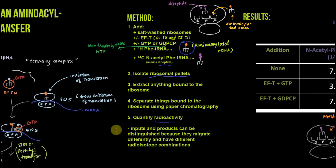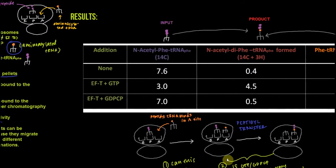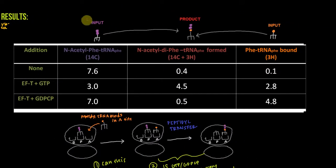The inputs and products can be distinguished because they migrate differently (they're different sizes) and have different radioisotope combinations. Here I've redrawn this as a table. We've got two inputs: N-acetyl-Phe-tRNA-Phe (mimicking being charged with a dipeptide, labeled as 14C) and Phe-tRNA-Phe (labeled with tritium). Our product will be labeled with both 14C and tritium, which we can distinguish after paper chromatography because it has both isotopes.